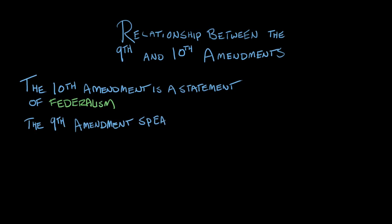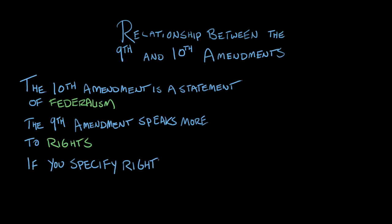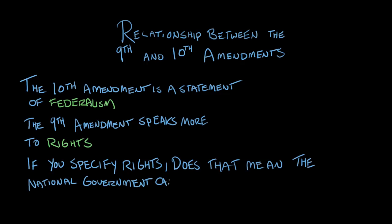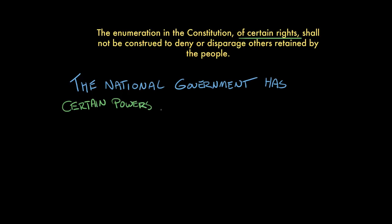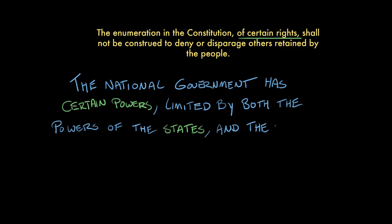The 9th Amendment speaks more to the rights side of things — we have certain rights set forth in the Bill of Rights, like the 1st Amendment's freedom of speech and religion, and the 4th Amendment's protection against unreasonable searches and seizures. There was concern in the late 1700s that specifying those rights might imply the national government could do whatever else it wanted. So the 9th Amendment says the enumeration of certain rights shall not be construed to deny or disparage others retained by the people — consistent with the idea that national government powers are limited, and rights are reserved to the people.